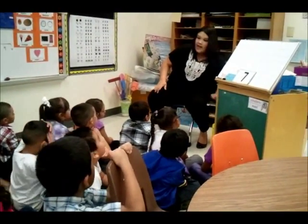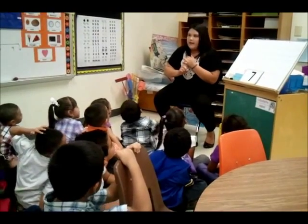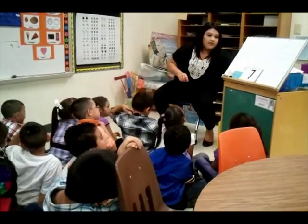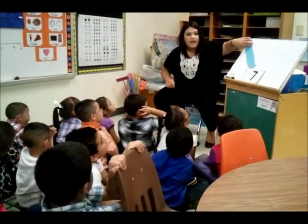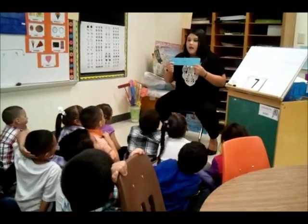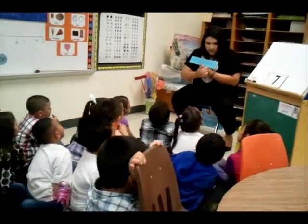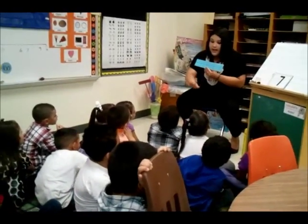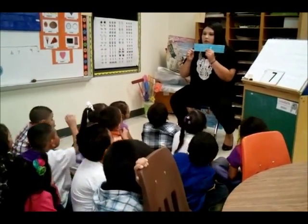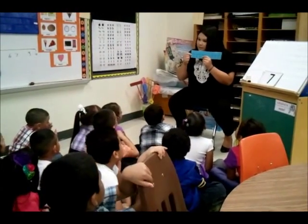Okay, so we count people. What else do we count? Animals. So today we're going to use a thing called a number line. Can you say that? A number line. I have numbers 0 to 10. So what is 0? Nothing. So if I give you something, are we going to put something on 0?